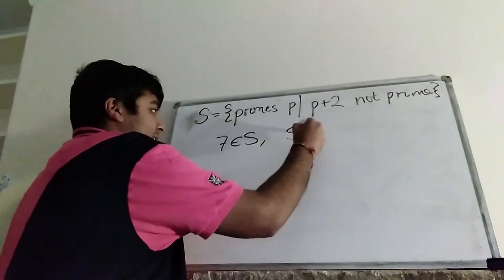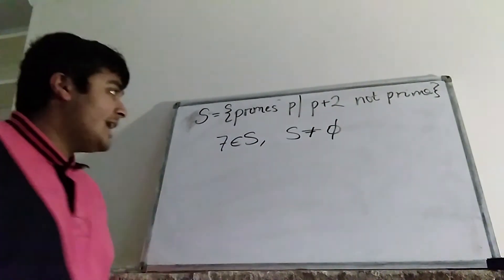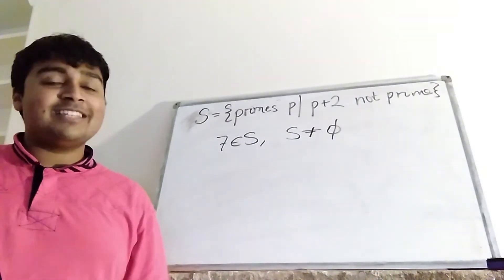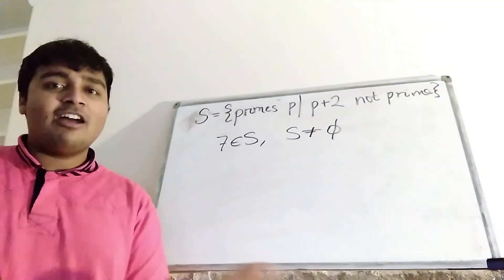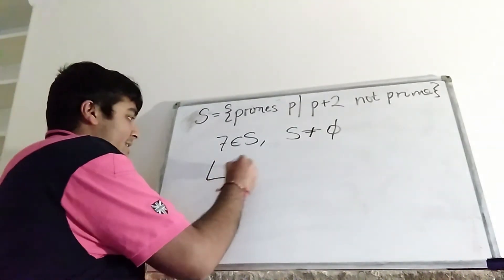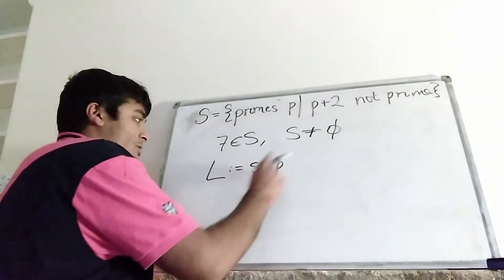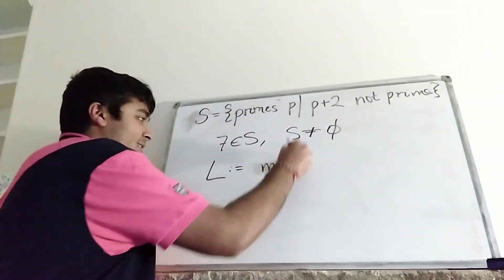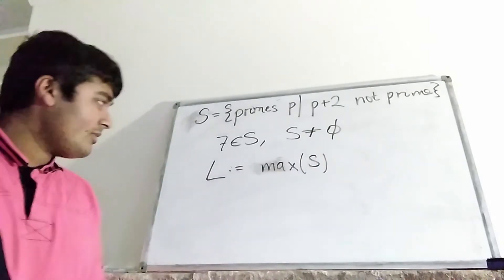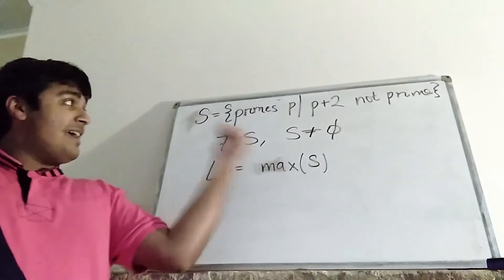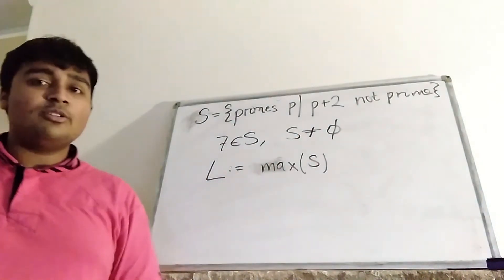So, S non-empty. And again, because we're supposing for contradiction that S has finitely many elements, it must have a largest element, which I'm going to call L. So, L is the largest element in S, so the supremum, well, let's not complicate things, let's just say the maximum element in S. Okay, cool. Well, so L is in S. So, L is a prime such that L plus 2 is not prime.